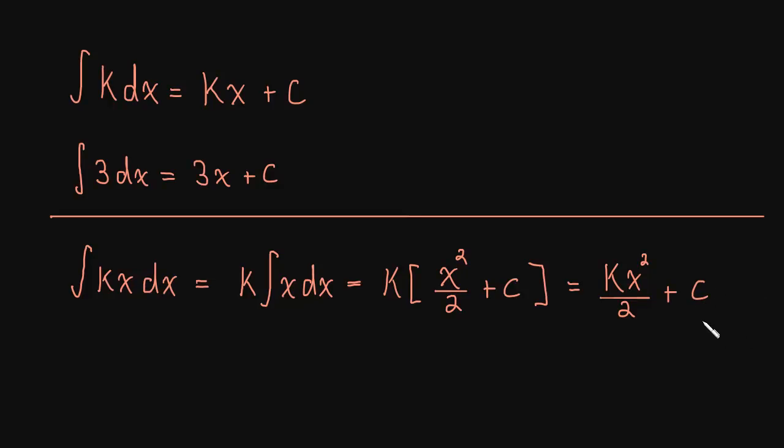Now, why didn't this c change? Why didn't I distribute the k to the c? Well, this c is an arbitrary constant, so the k did distribute to the c, but it didn't make any difference because c is arbitrary to begin with. We don't know what c is, so the k gets absorbed in as a constant.